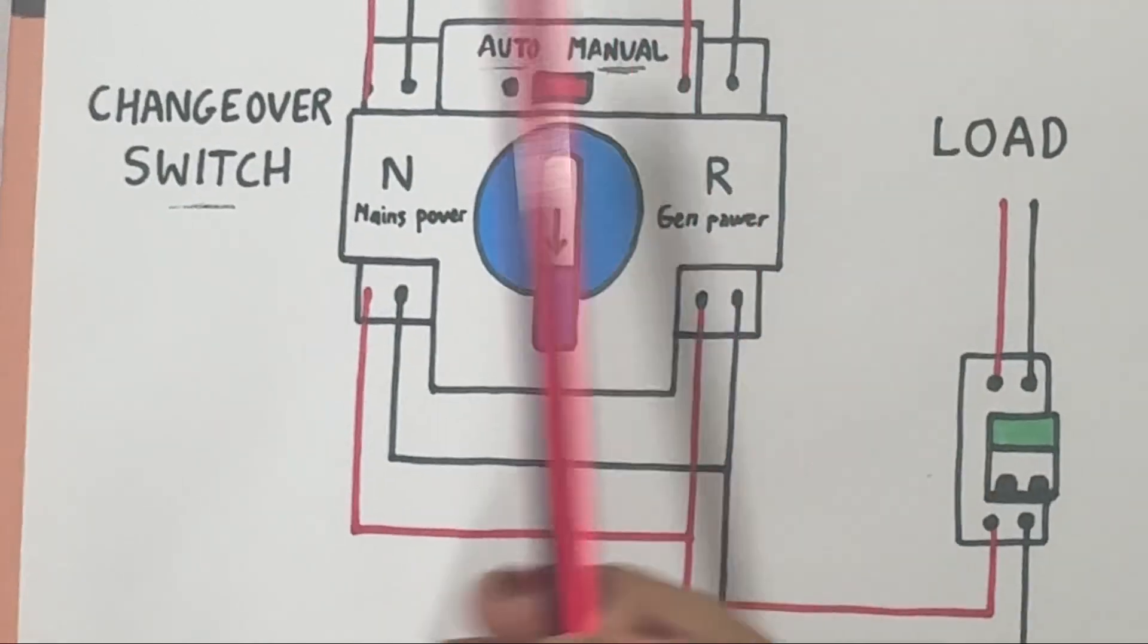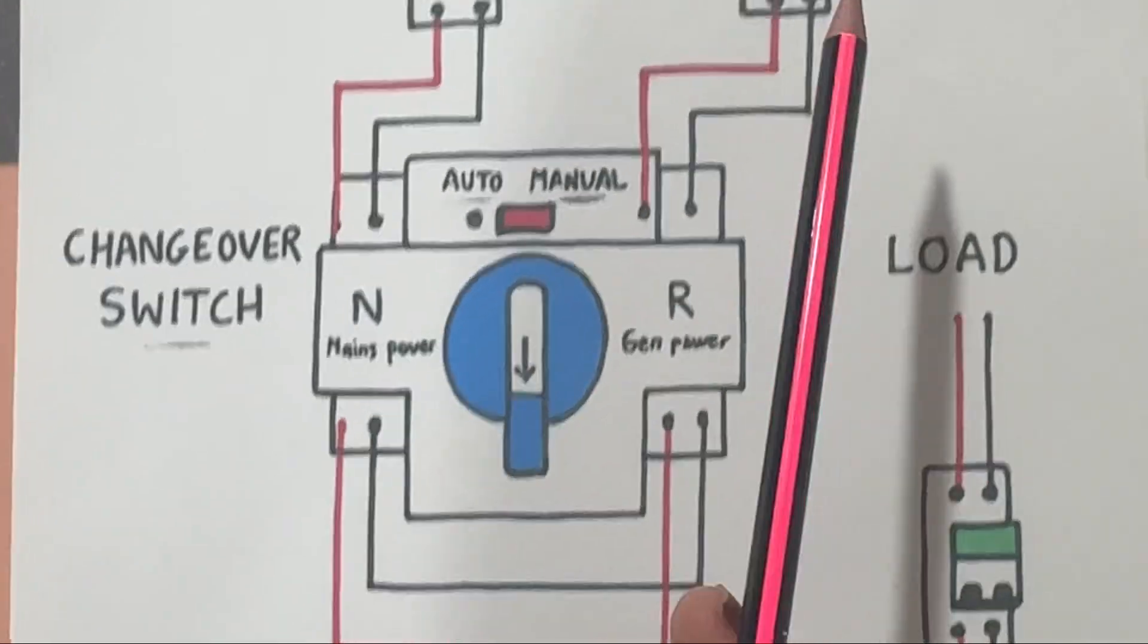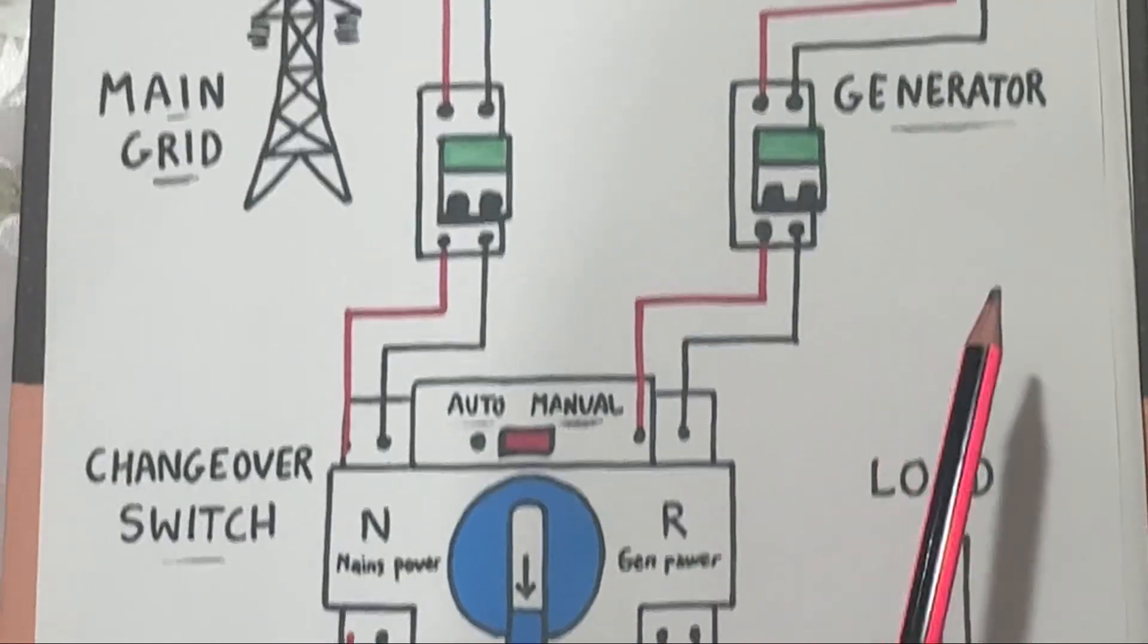Restoration: when grid power returns, ATS switches back to main power and stops the generator.